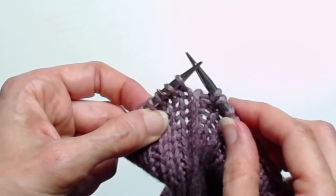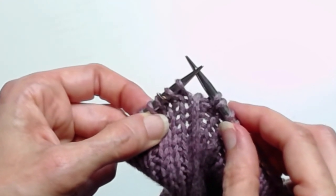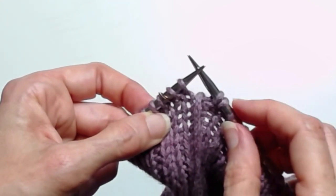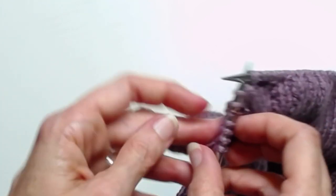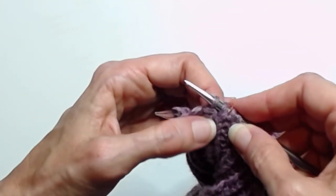An SSP stands for slip slip purl and it creates a single left slanting decrease on the public side, so you won't really see it until you turn around.